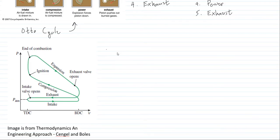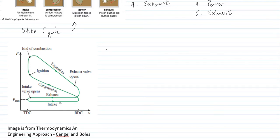This is your pressure-volume graph. As discussed, we have the intake stroke where the piston travels from the top dead center to the bottom dead center. Then you have the compression stroke.